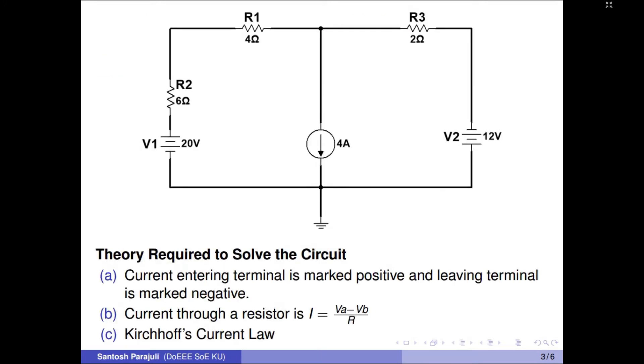The circuit has three resistors, two voltage sources, and a current source. Two resistors, six ohms and four ohms, are in series.